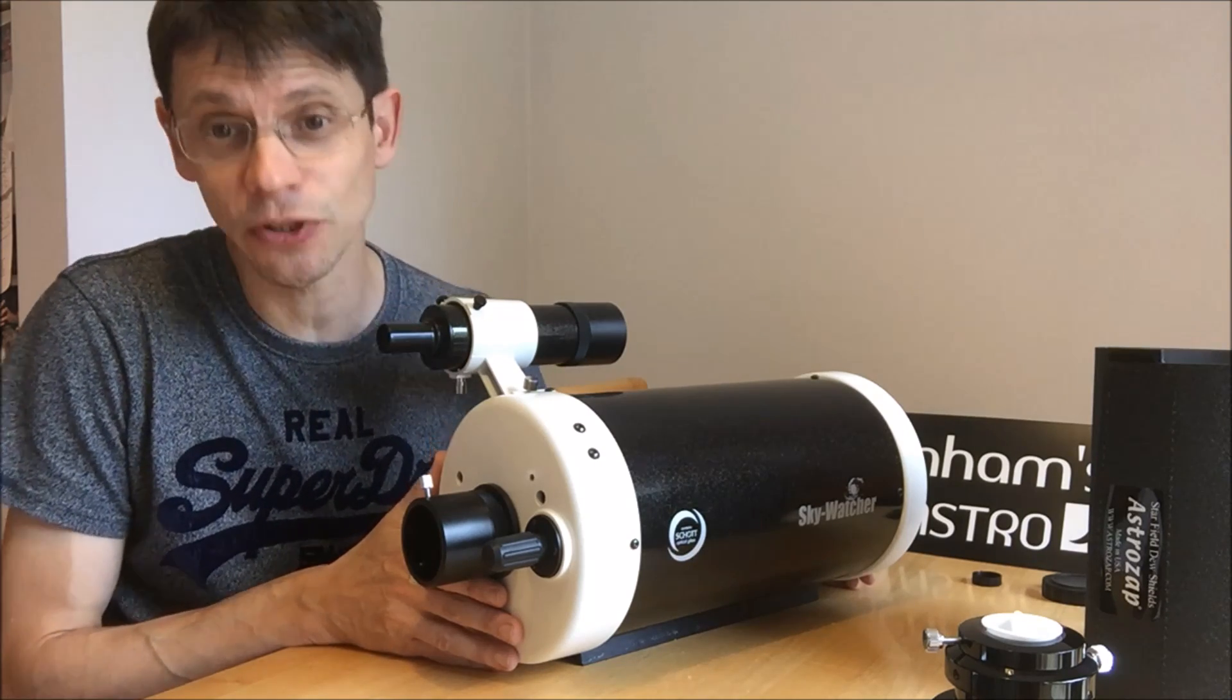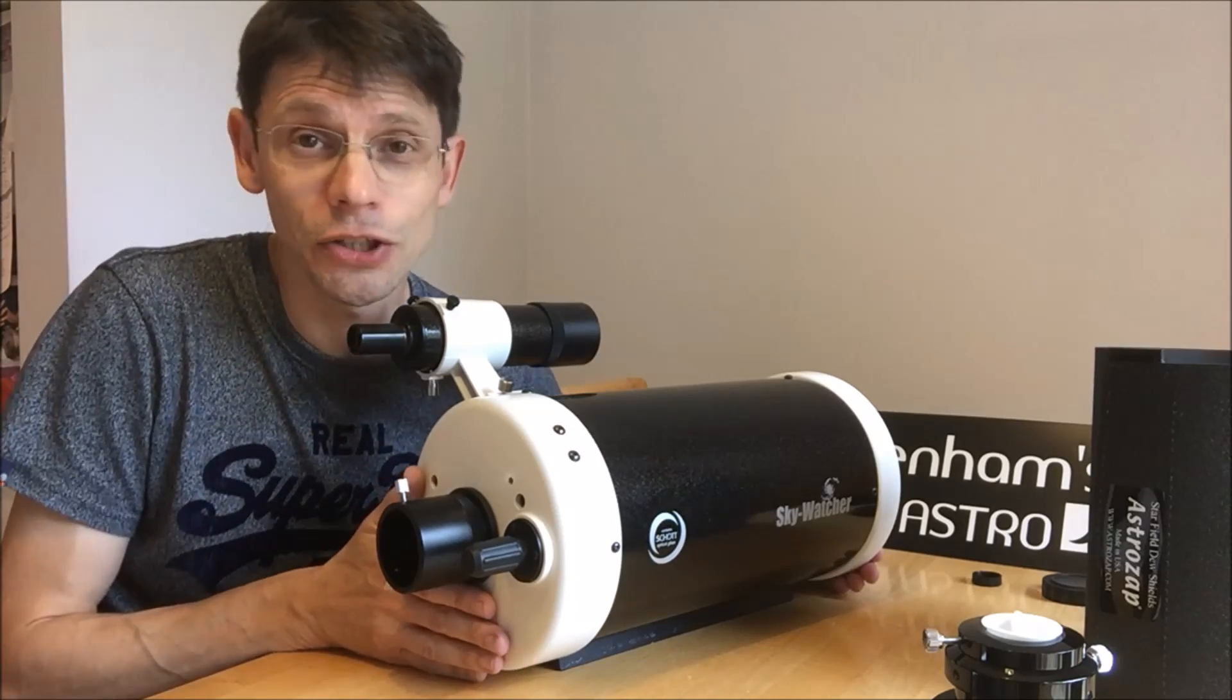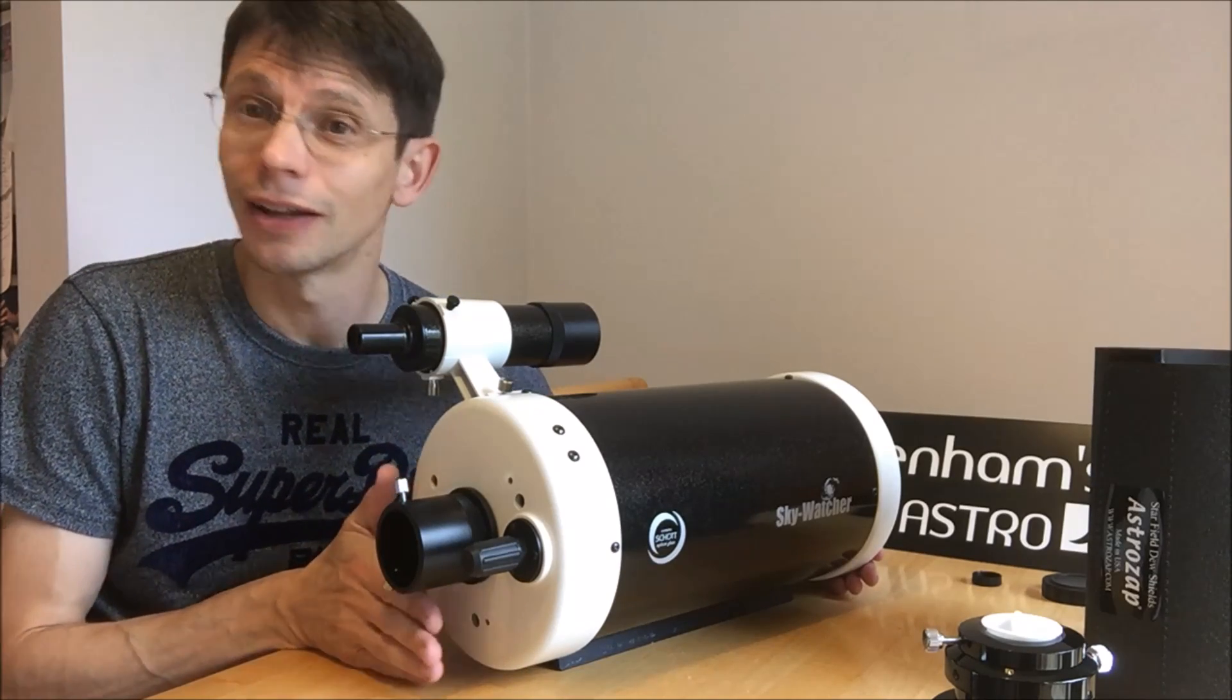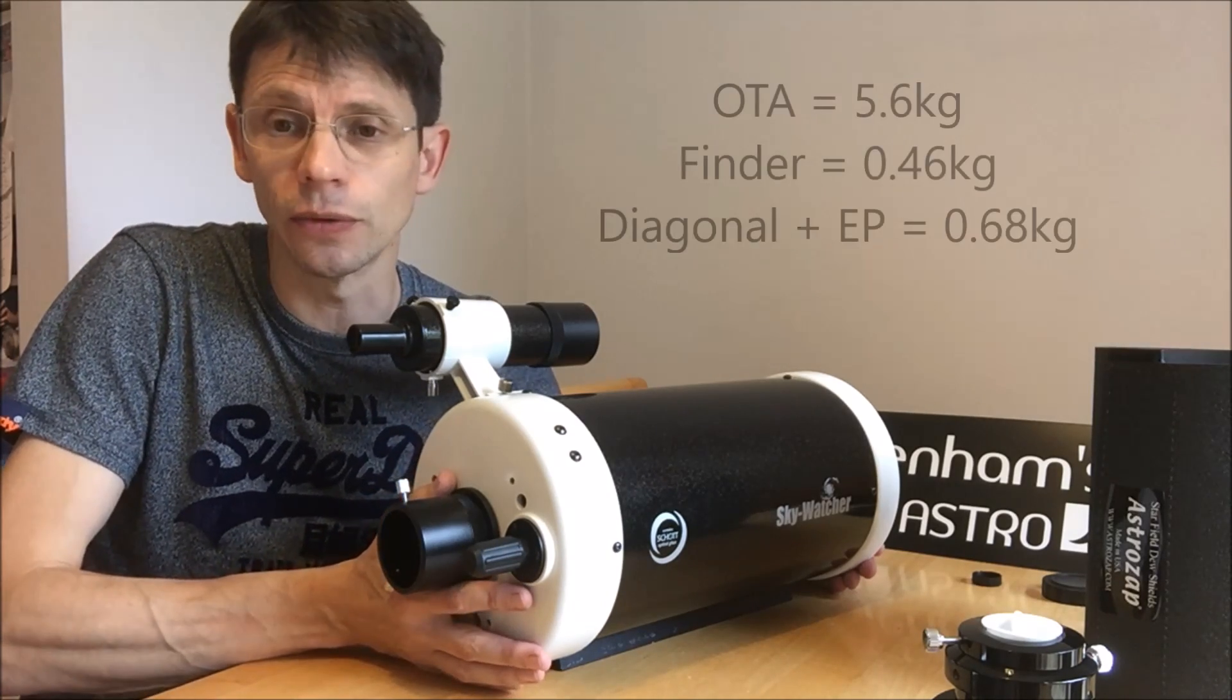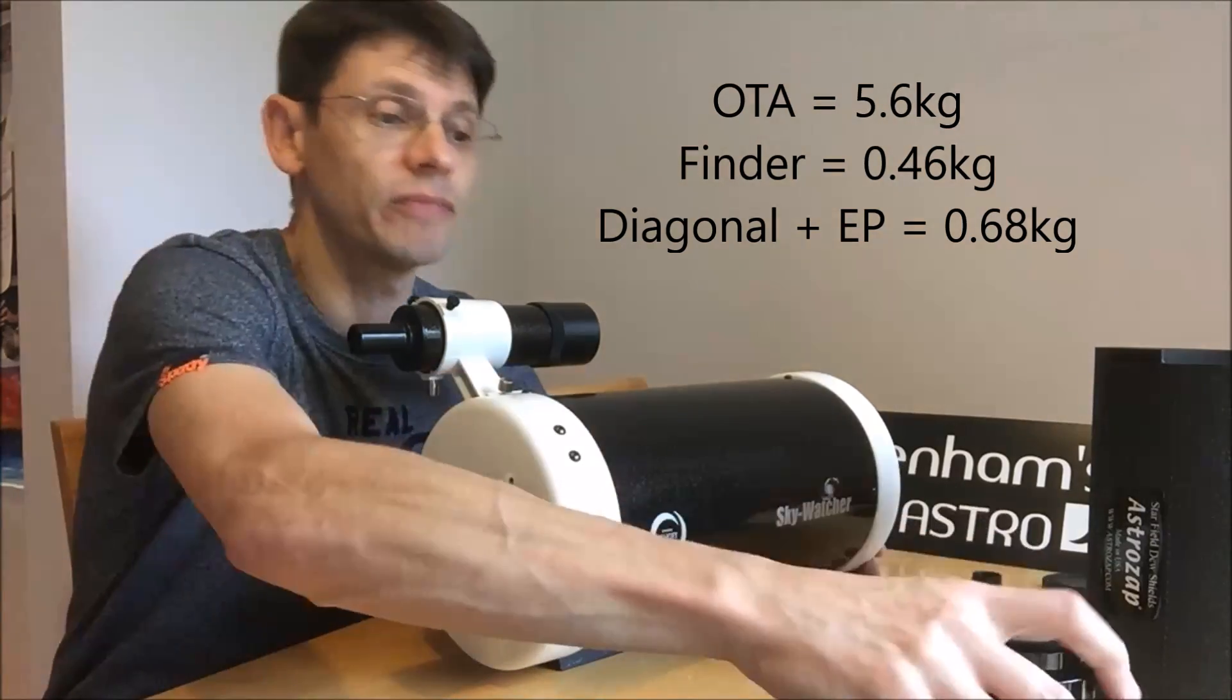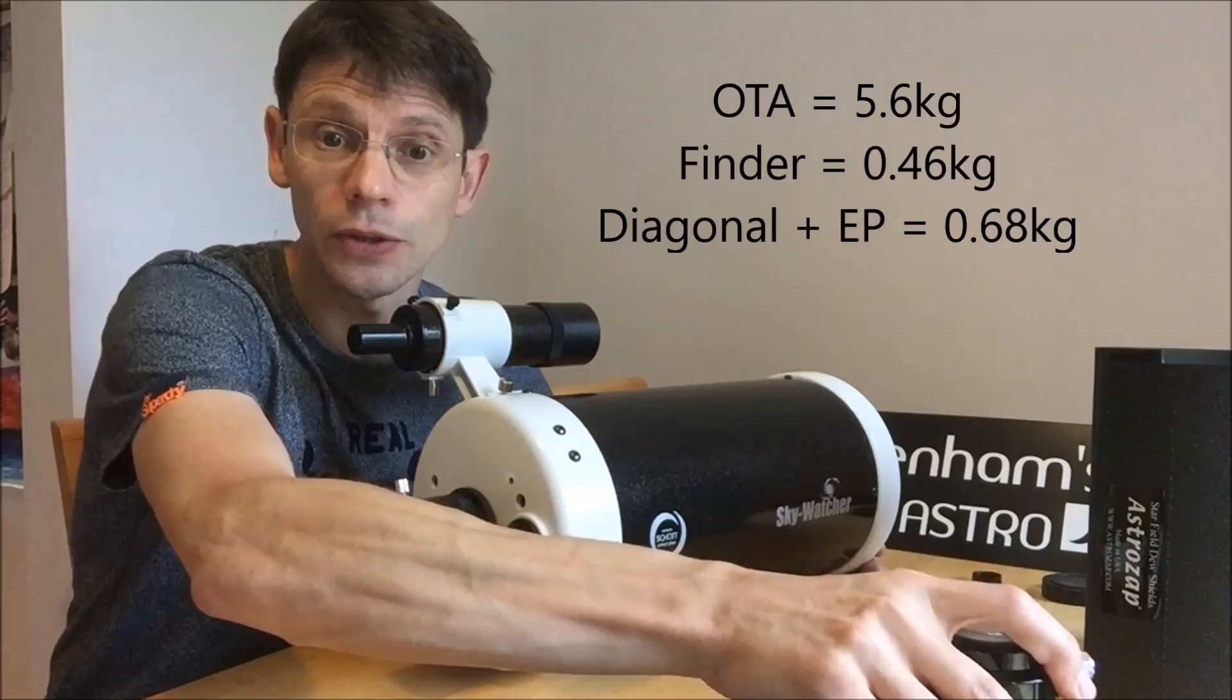Okay, now for some downsides. This scope is not grab-and-go like a 90mm or 127mm Maxitoff. The scope and the Finder weighs six and a half kilos, and you add another kilo for a focuser like this, and you've got seven and a half kilo scope.